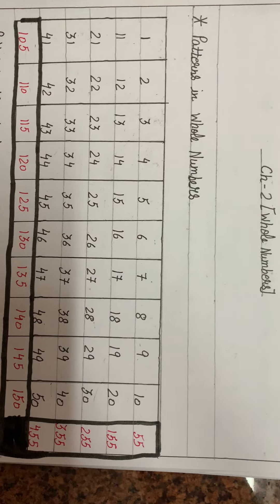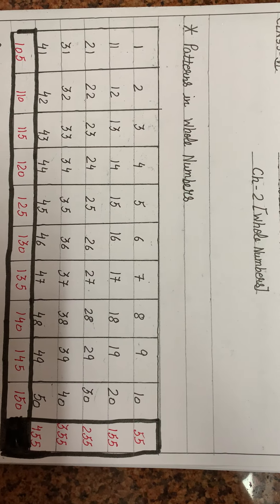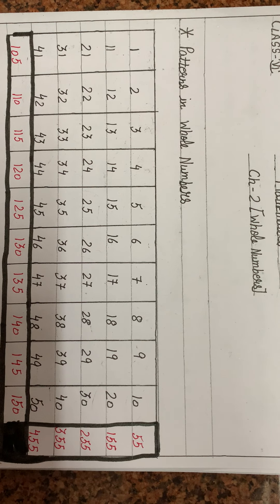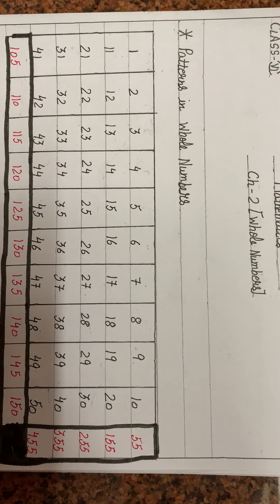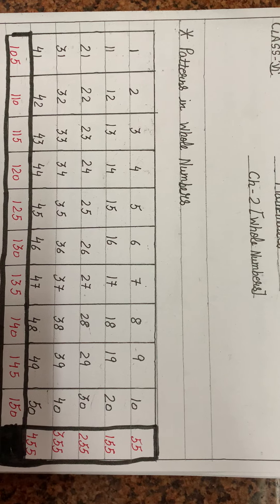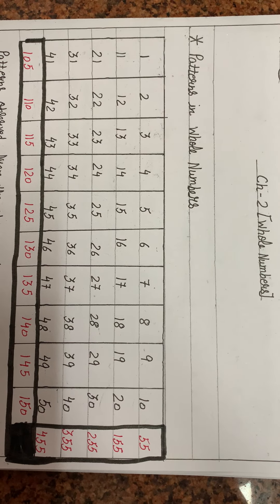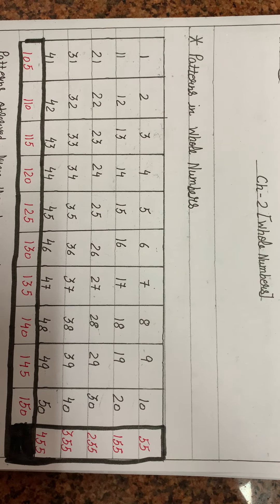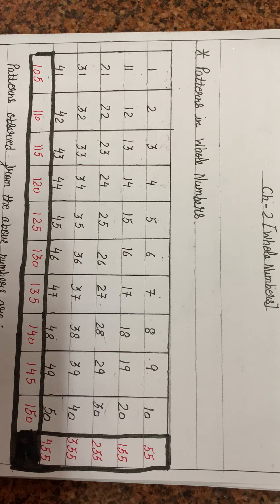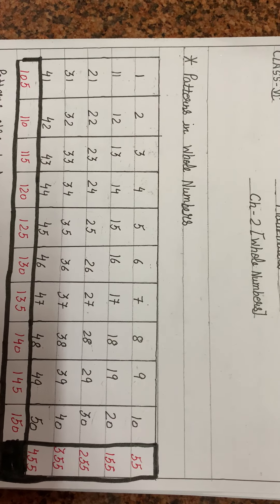Our next topic is Patterns. Before we start with Patterns in Whole Numbers, let me first explain what patterns are. Patterns are a particular sequence that follows. For example, if we look at day-to-day life — there are 7 days in a week: Sunday, Monday, Tuesday, Wednesday, Thursday, Friday, Saturday, then again Sunday. So a pattern follows — it repeats in sequence. That is a pattern.